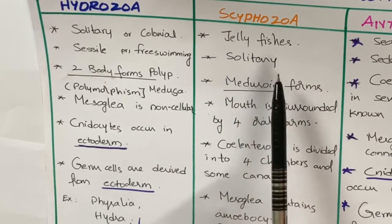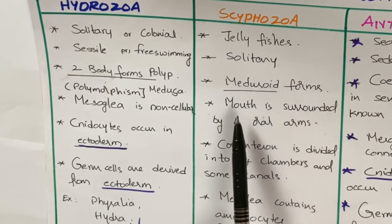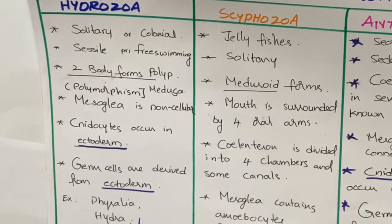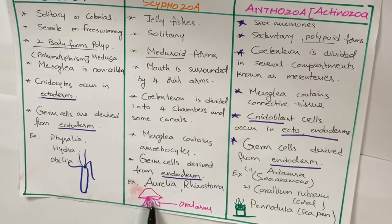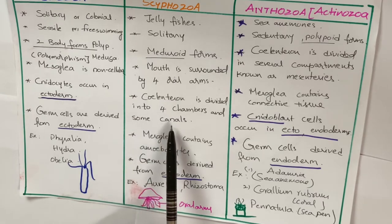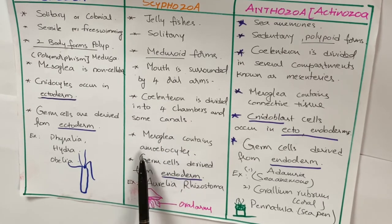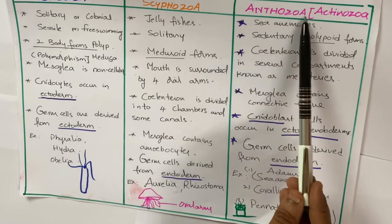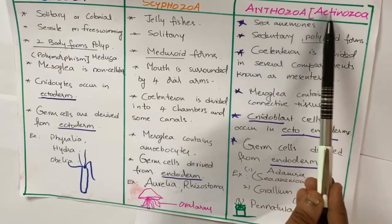Coming to Scyphozoa — Scyphozoa animals are commonly known as jellyfishes. These are solitary medusoid forms. The mouth is surrounded by four oral arms. The coelenteron is divided into four chambers and some canals. Mesoglia contains amoebocytes, and germ cells are derived from the endoderm.